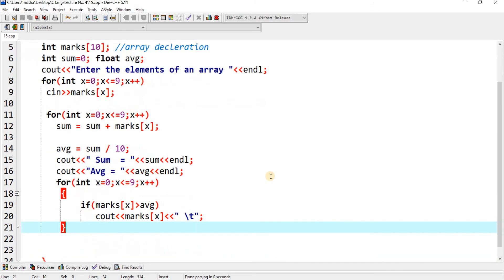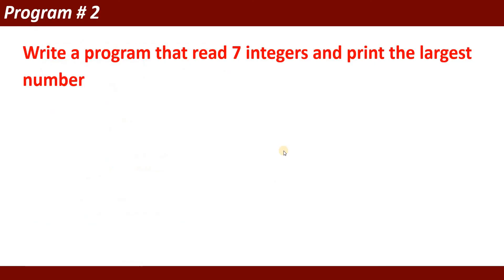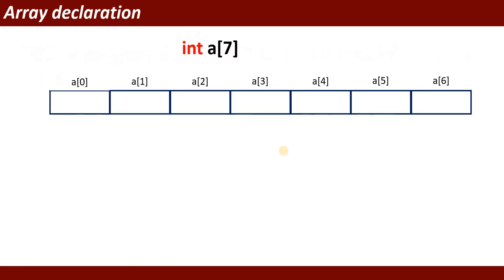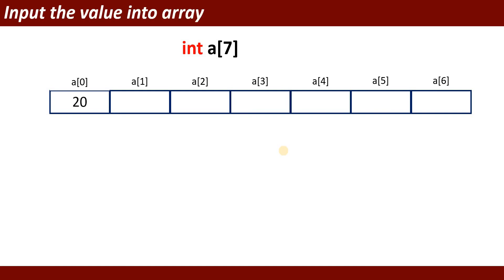This is the complete first program. Program number 2: write a program that reads 7 integers, then prints the largest number — the max value from the array. The array declaration has array name A, data type integer, with 7 elements. The element values are: 20, 10, 35, 15, 15, 25, and 30.